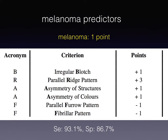After a thorough analysis of our results, we concluded with this algorithm under the acronym BRAF, where we suggest four positive melanoma predictors and two negative melanoma predictors. Among the positive melanoma predictors, the parallel ridge pattern predominates, posing immediately three points for melanoma when we only need one point to set the diagnosis. This means that when we see a parallel ridge pattern, we can immediately set the diagnosis of melanoma. We also have asymmetry of structures, asymmetry of colors, and the irregular blotch. On the other side, we have two predictors of nevus: the parallel furrow pattern and the fibrillar pattern.